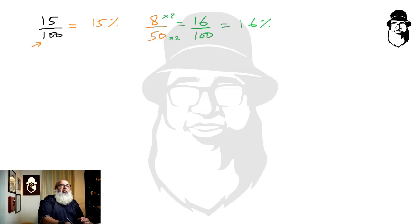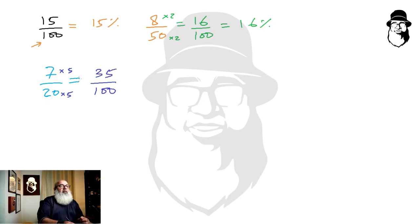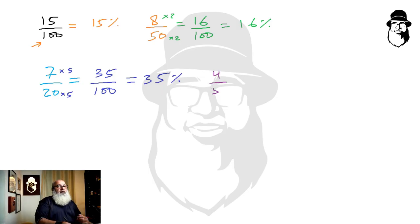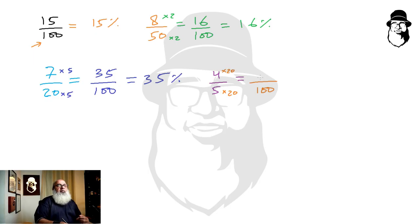If we have seven twentieths, we can easily multiply top and bottom by five to get the denominator as hundred. So seven times five is thirty-five, meaning seven over twenty is thirty-five hundredths, or thirty-five percent. To convert four-fifths to a percentage, we multiply by twenty-five — twenty times five is hundred — and four times twenty-five is eighty, so four-fifths is eighty percent.